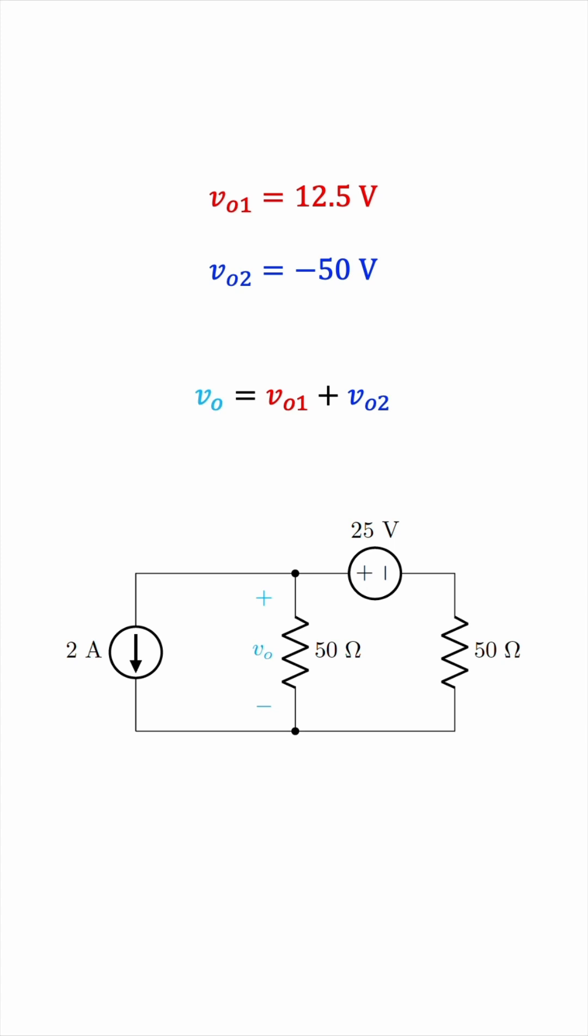And we've already done that by making sure the second voltage is negative and just keeping track of the plus-minus polarity in each case. So all we have to do now is add 12.5 to negative 50, and the result will be negative 37.5 volts. And this is exactly the same result we obtained using the node voltage method to analyze the same circuit.